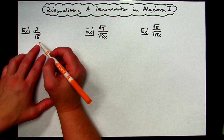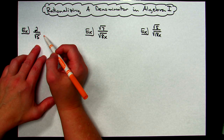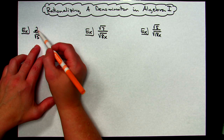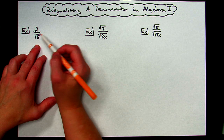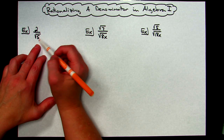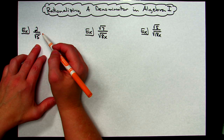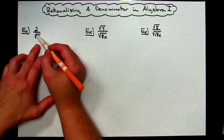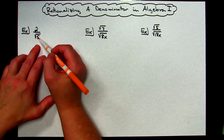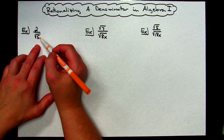Let's suppose we're dealing with radicals and we've got something like 2 over square root of 5. That would be our final answer after we'd simplified something. There is a rule that says we cannot have that radical in the bottom, so we need to get rid of it.